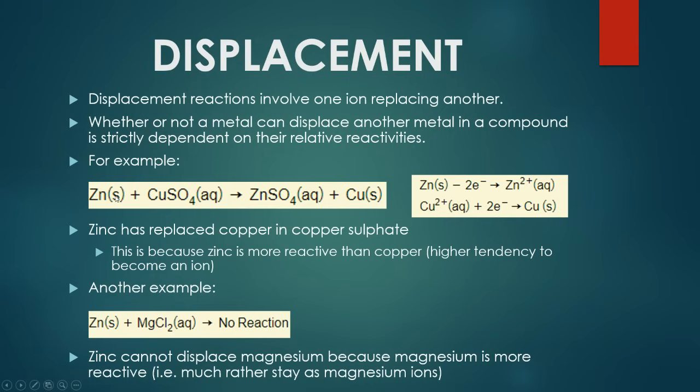Zinc would much rather prefer to be an ion in this scenario, and copper would much prefer to become an elemental metal rather than an ion. So therefore, they swap places because it's a win-win situation. Whereas, if you had zinc added to magnesium chloride, magnesium is perfectly happy where it is at the moment, because it's more reactive than zinc, and it has a higher tendency to remain in ionic form, so therefore you won't get any reaction at all.